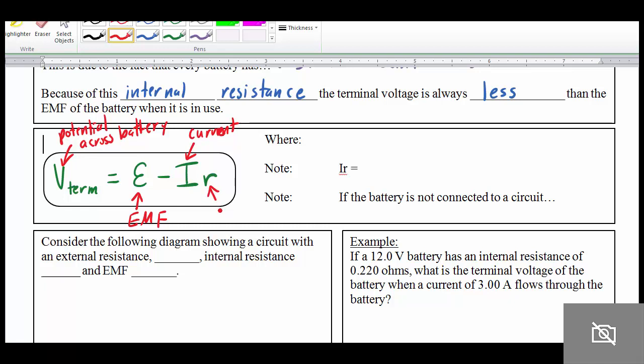And then small r, and it's important this is small r, that's the internal resistance. So that's how much resistance is just built into the battery itself. We don't obviously add resistors into the insides of batteries, but they just naturally have a certain amount of resistance that we can't avoid.